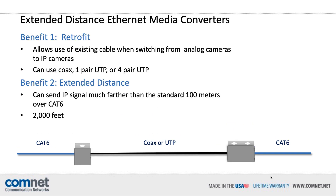Now let's take a look at extended distance Ethernet media converters. The main reason people use them is a retrofit application where you are moving from an analog camera infrastructure to an IP camera infrastructure. These media converters allow you to use the existing coax cable or UTP cable and now run Ethernet on it instead of the analog signal. This can represent a huge cost saving versus pulling out the existing cable and running new Category 6 cable. The second most common benefit is being able to send an IP signal much farther than the standard 100 meters over CAT-6 without switching to more expensive optical fiber.